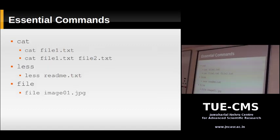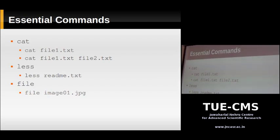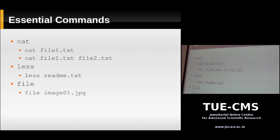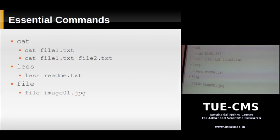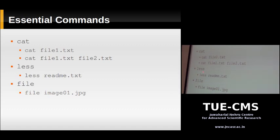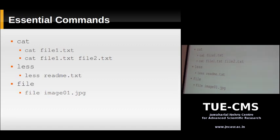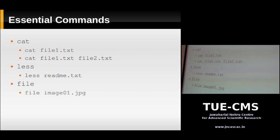The 'cat' command reads a file and writes its contents to standard output — which by default is your screen. When you execute 'cat file1.txt', it prints the contents of that file to the screen. The name comes from 'concatenate' — if you specify more than one file, cat prints all of them in sequence to standard output without any separation.